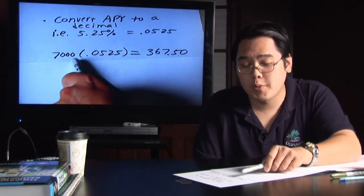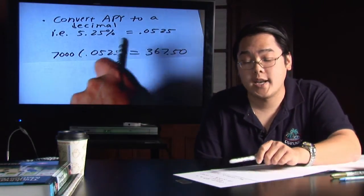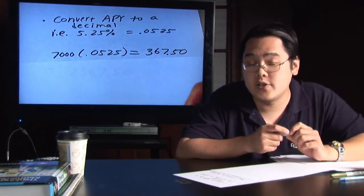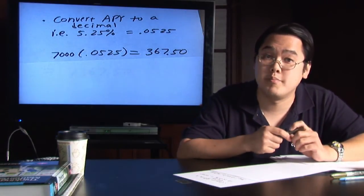And so when you multiply these two numbers, you're going to find out that your savings account earned you $367.50 over that year, which is a pretty big chunk of change.